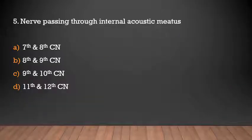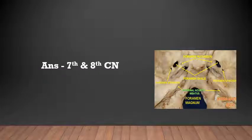What passes through the internal acoustic meatus? 7th and 8th cranial nerve, 8th and 9th cranial nerve, 9th and 10th cranial nerve, or 11th and 12th cranial nerve? The answer is 7th and 8th cranial nerve. The internal acoustic meatus transmits the facial nerve and the vestibulocochlear nerve.